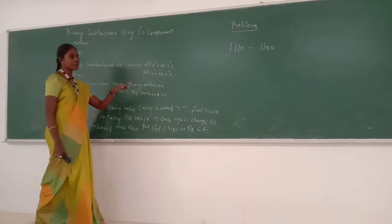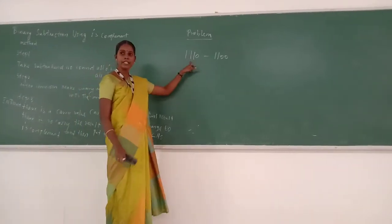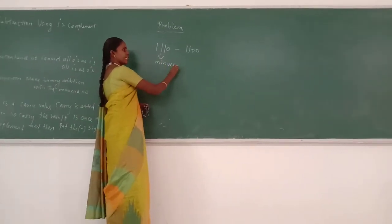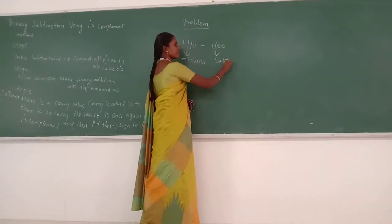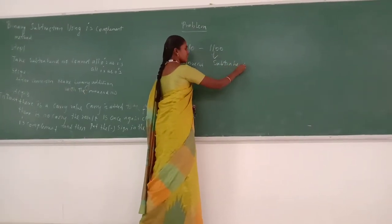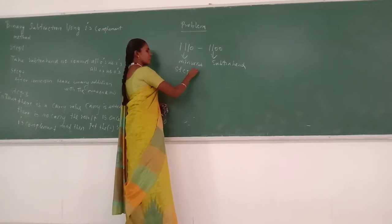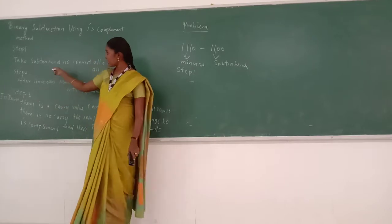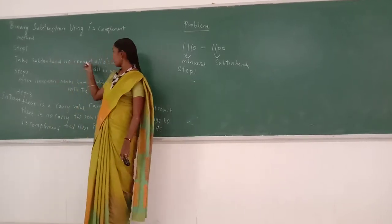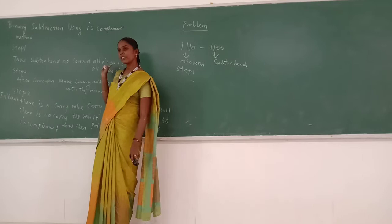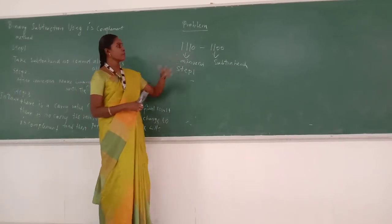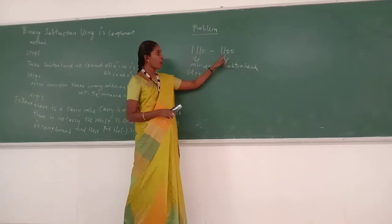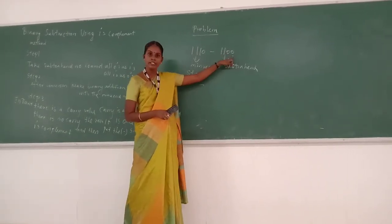Now we move to the problem. The first number is known as the minuend number and the second number is the subtrahend number. We have to apply these steps to the problem. Take the subtrahend number and convert all zeros as ones and all ones as zeros. In the problem, the subtrahend number is 1 1 0 0. We now have to convert: all ones as zeros and all zeros as ones.